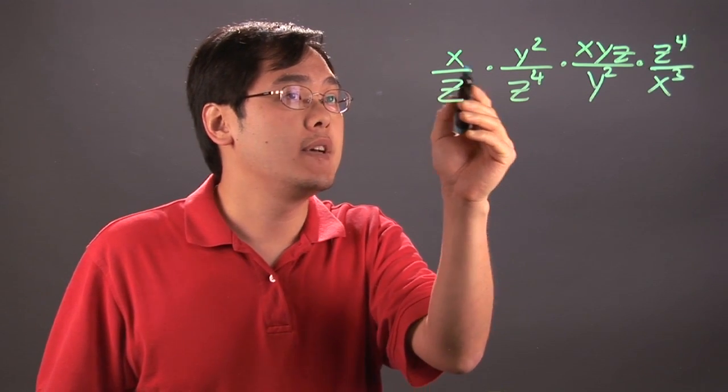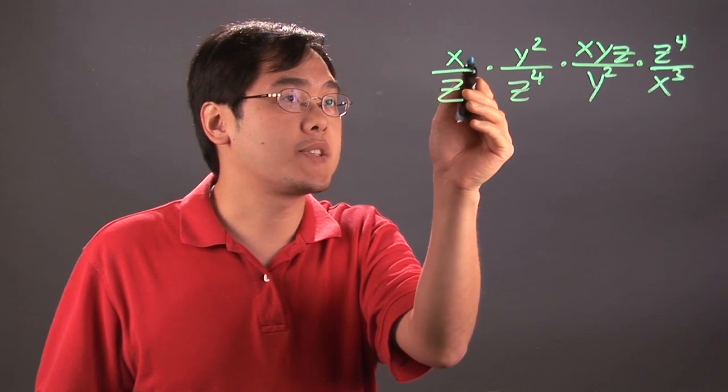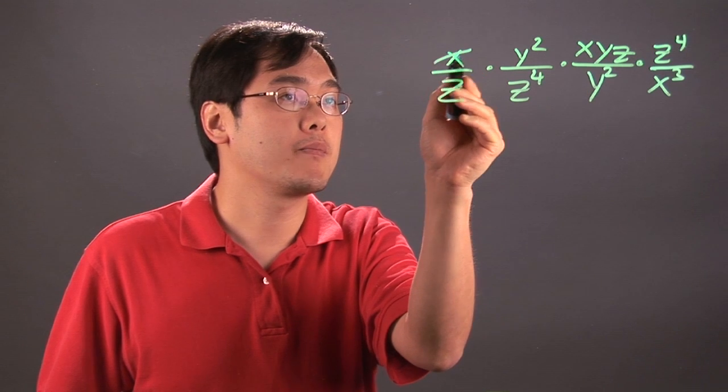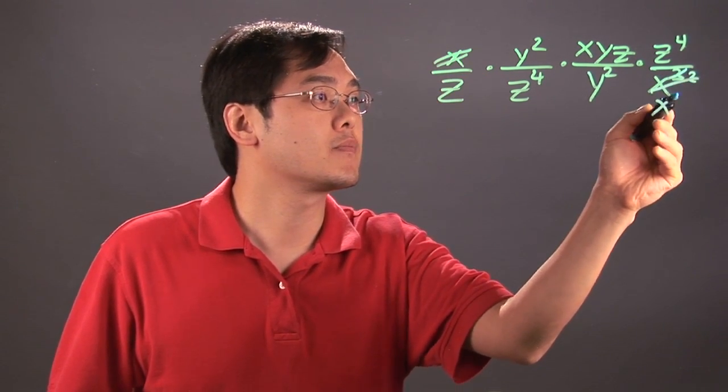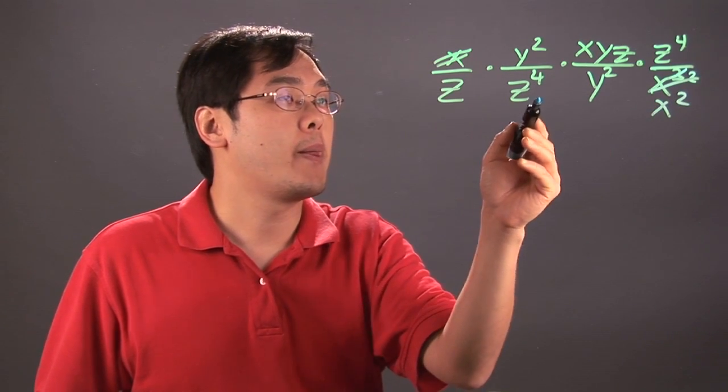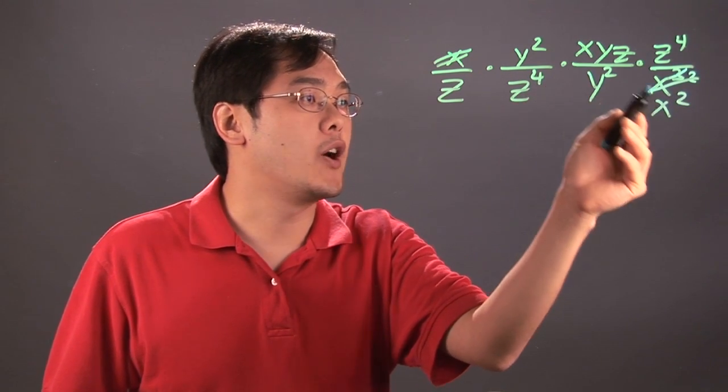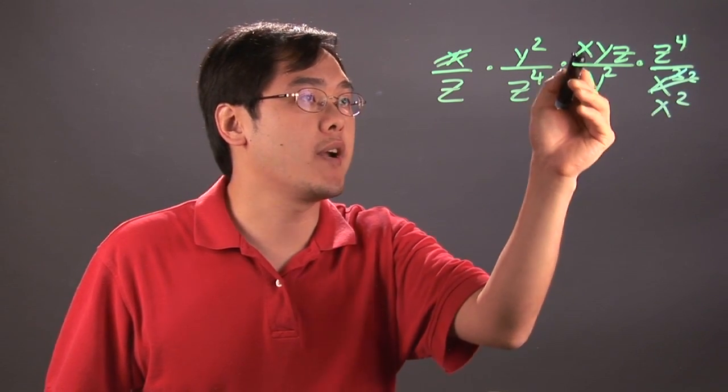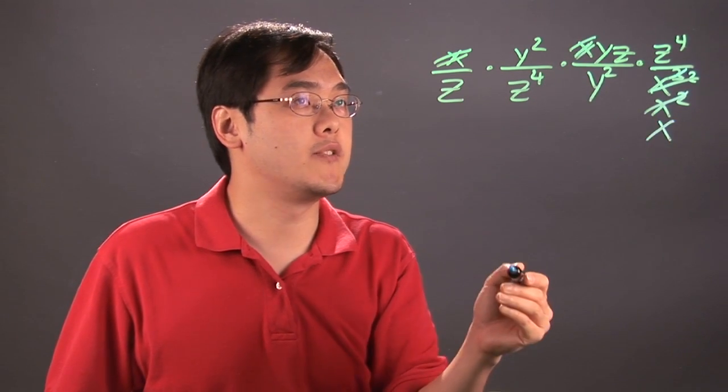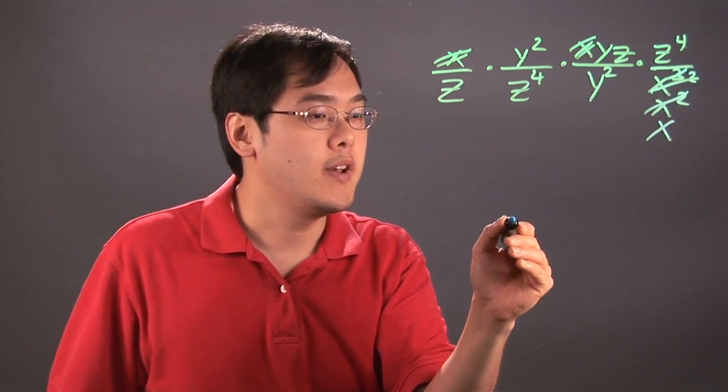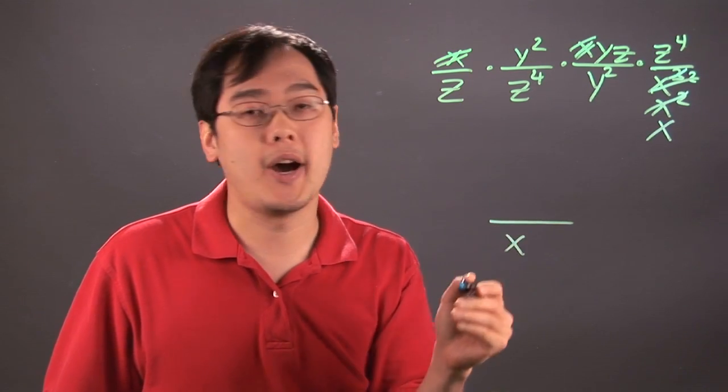If you have x, for example, x can be reduced with x cubed and there's going to be an x squared left over. This x can also further reduce with this x squared and there will be one x left over. So at the end of the day, there's going to be an x at the bottom as part of your answer.